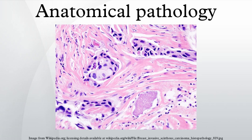Histopathology involves the microscopic examination of stained tissue sections using histological techniques. The standard stains are hematoxylin and eosin, but many others exist. The use of hematoxylin and eosin stained slides to provide specific diagnoses based on morphology is considered the core skill of anatomic pathology. The science of staining tissue sections is called histochemistry.